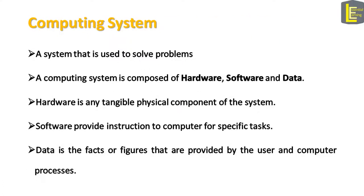When you say the word computer, you mean the device that you use for communicating, maybe for entertainment, or maybe at work. We will use the term computing system to refer to a system that is used to solve problems. A computing system is composed of hardware, software, and data. Hardware is any tangible or physical component of the system, while software is a set of instructions given to the computer to perform specific tasks. Data is the facts or figures provided by the user that the computer processes.